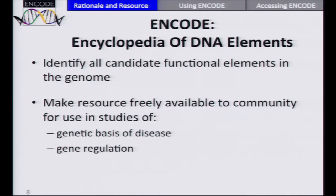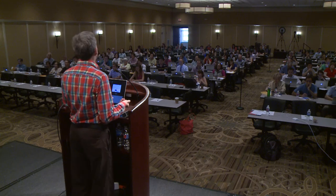ENCODE stands for Encyclopedia of DNA Elements. The aspirational goal of ENCODE is to identify all of the candidate functional elements in the genome. The twin goal — without which the first goal would be irrelevant — is to share that resource freely, making it available for the biomedical community so that it can be widely used. We think this resource is very useful in studies of the genetic basis of human disease, as well as gene regulation.